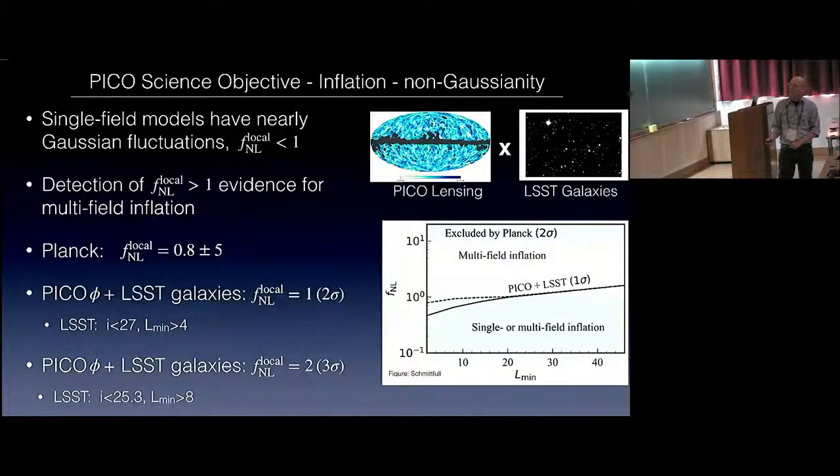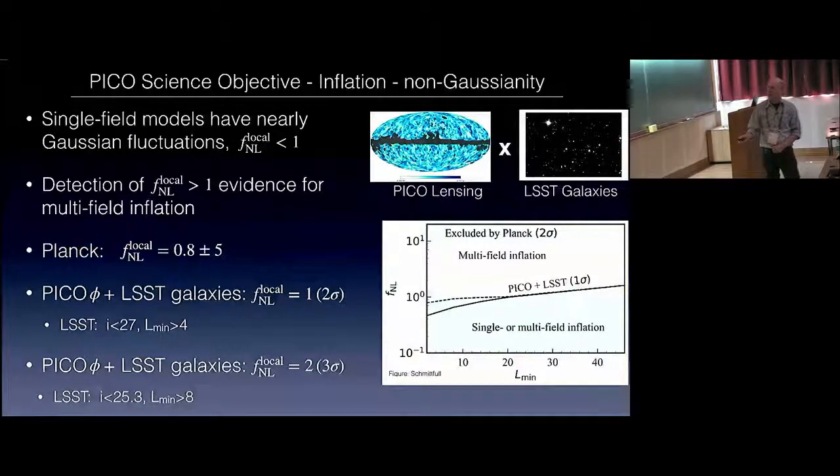By correlating the Pico lensing with LSST galaxies, we should be able to reach f_NL equals one at two sigma. That's an important milestone. The assumptions for LSST galaxies are given here. The l_min that is used for LSST galaxies is four, and that gives two sigma of f_NL one. If we relax that to l_min equals eight, if we can't use the LSST galaxies at such low l's, we could do f_NL two at three sigma, and the dash line is if we just start at Pico at l equals 20. That reduces to about two sigma.